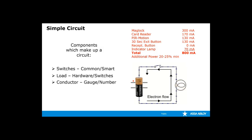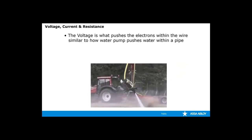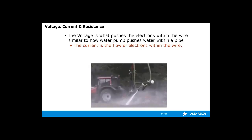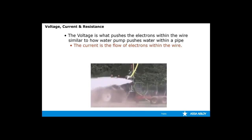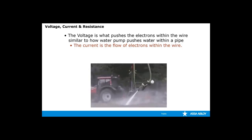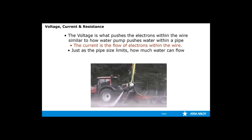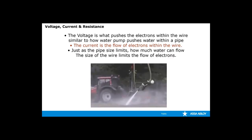We have the conductor, which carries the current from the power source to the load and then back to the power source. And the last item is the power source, measured in amps and volts. Voltage is what pushes the electrons within a wire, similar to how a water pump pushes water within a pipe. Just as current flows in the wire, the size of a pipe affects how much water can flow, just as the size of a wire determines how many electrons can flow. So the size of the wire does make a big difference.